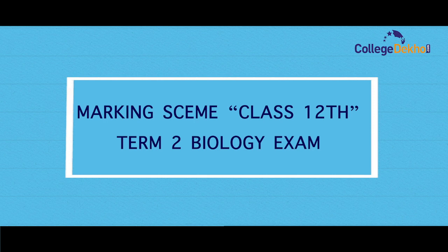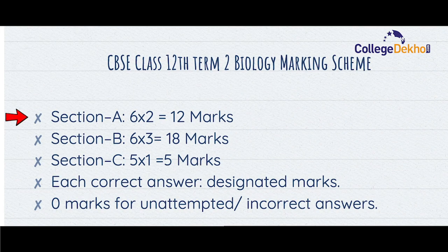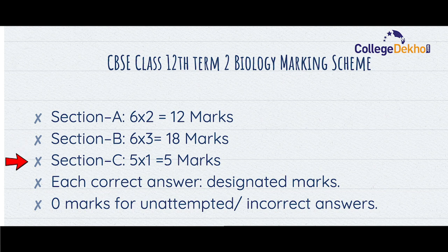Now let us look at the marking scheme for the CBSE Class 12th Term 2 Biology exam. Section A will have six questions of two marks each, giving Section A a total of 12 marks. Section B will have six questions of three marks each, giving Section B a total of 18 marks. Section C will have one case-based question of five marks, giving Section C a total of five marks. Each correct answer will carry the designated marks, and there will be zero marks for unattempted and incorrect answers.